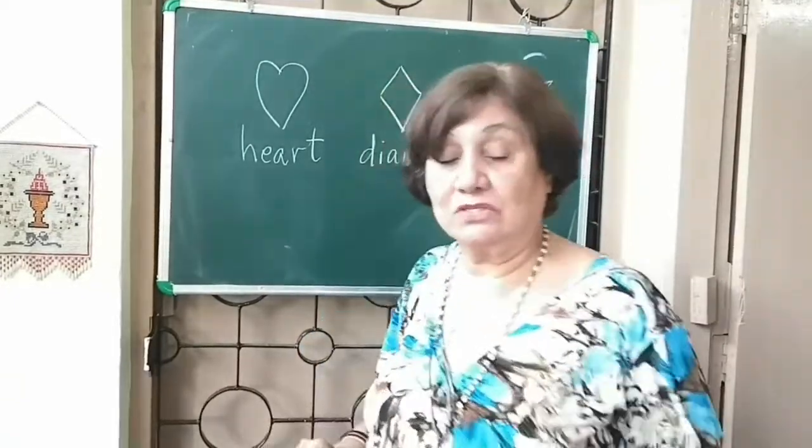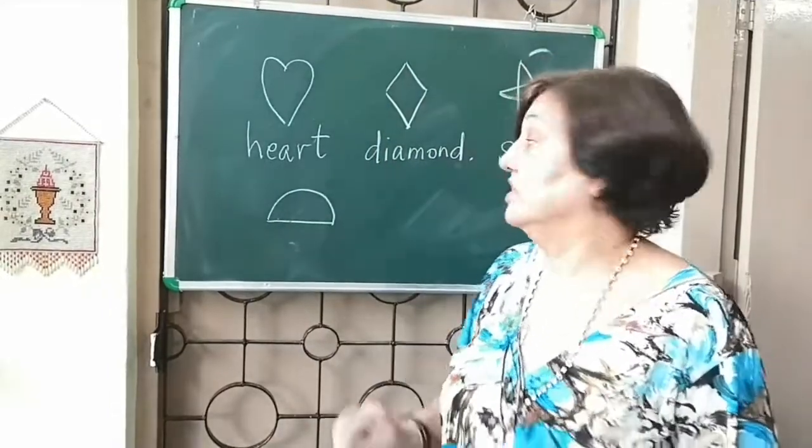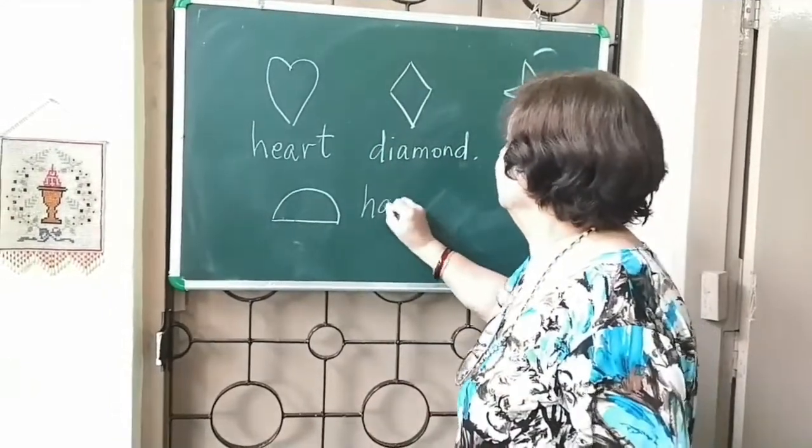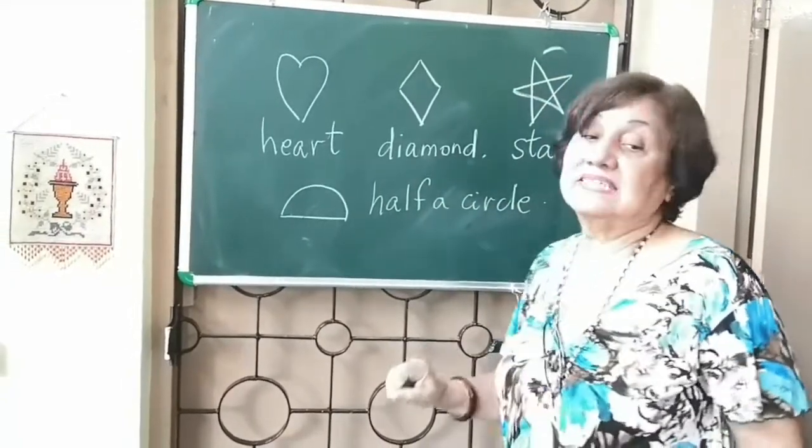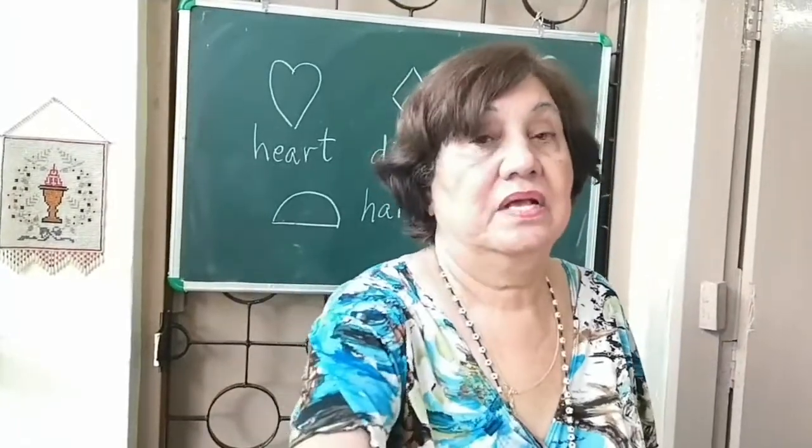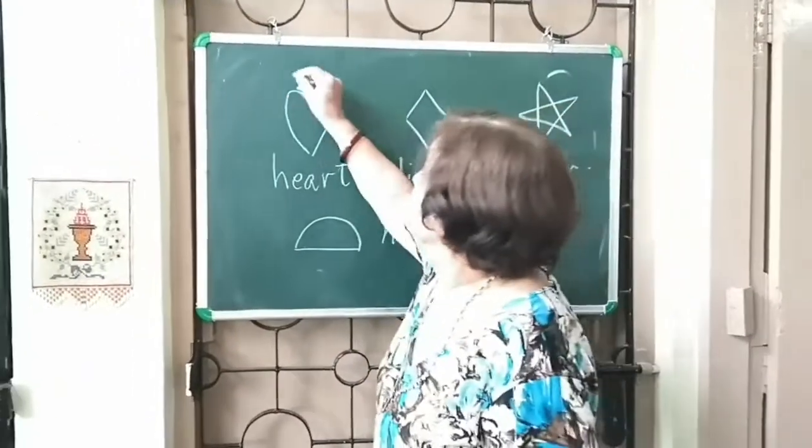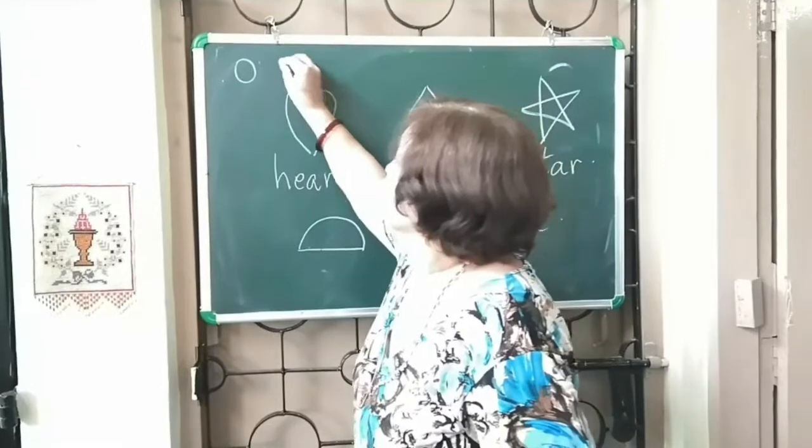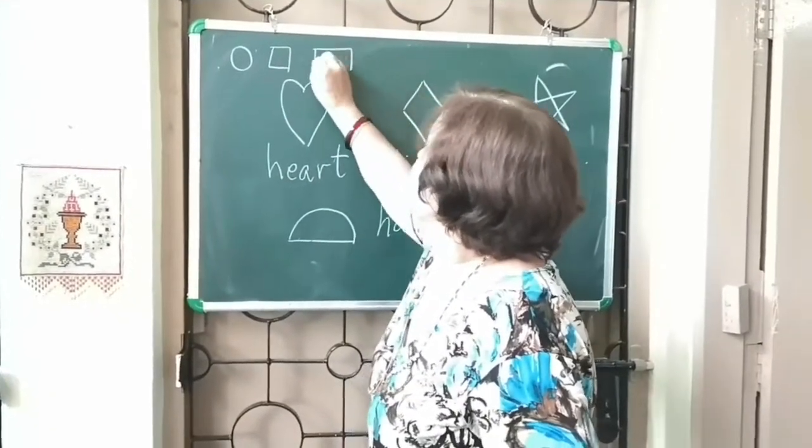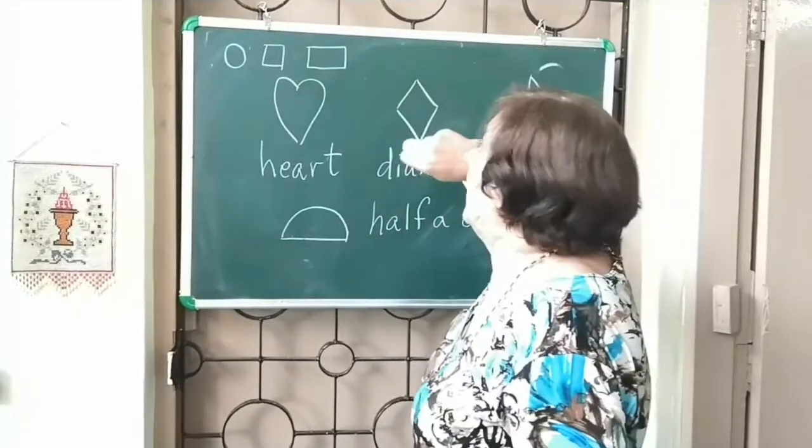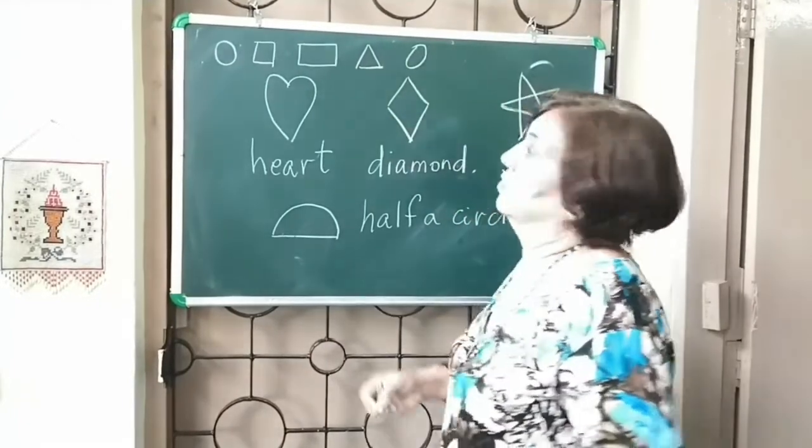And one more I am going to talk to you about is half a circle. We either call it half a circle or we can call it as a semicircle. So up till now I have taught you so many shapes. I have taught you a circle, a square, a rectangle, a triangle, and an oval.